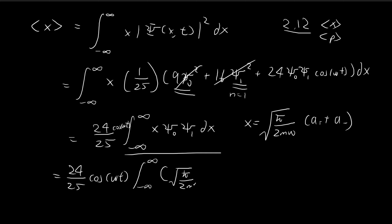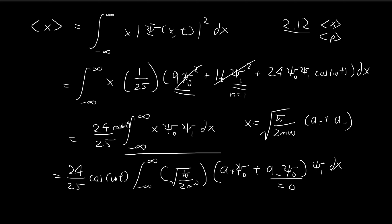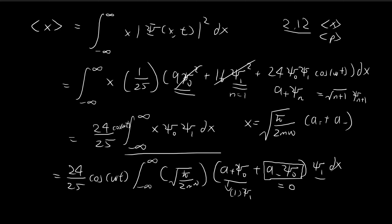We have all these constants, and then we apply a+ to ξ₀ and a- to ξ₀, times ξ₁ dx. By definition, a- applied to the lowest energy state gives 0 — if you lower the ground state further, you get 0. For a+ ξ₀, we use the formula a+ ξₙ = √(n+1) ξₙ₊₁, so a+ ξ₀ = 1 × ξ₁.